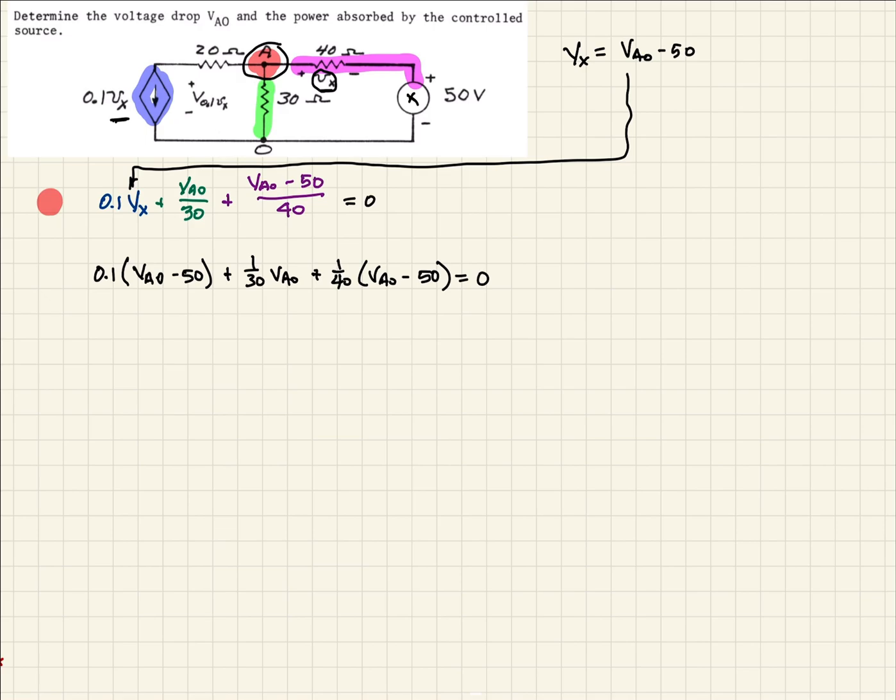And so now we have one equation, one unknown. We can work this out then. If you solve for VA0 here, again, just a simple algebra problem, you should come up with 39.475 volts.